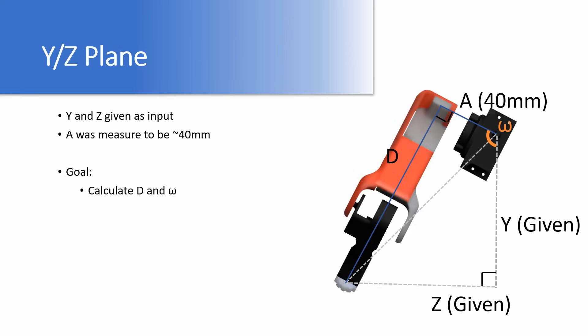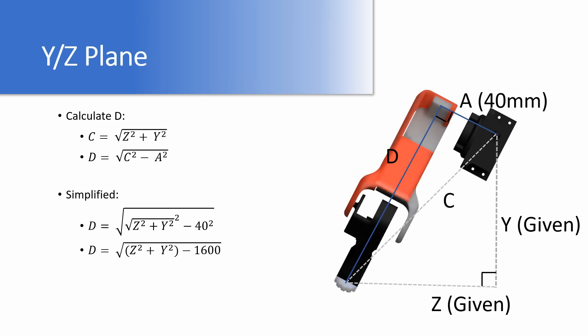In the YZ plane, Y and Z are given as inputs. A was already measured to be about 40 millimeters. Our goal is to calculate D and omega. To calculate D, we must first calculate C using the Pythagorean theorem, where we get C equals the square root of Z squared plus Y squared. From there we can calculate D as D equals the square root of C squared minus A squared. We can then simplify that down to D equals the square root of Z squared plus Y squared minus 1600.